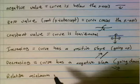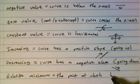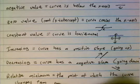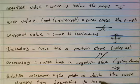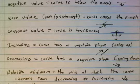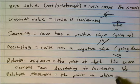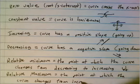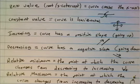A relative minimum is the point at which the curve changes from decreasing to increasing. We didn't use that definition last year but that little picture should look familiar. A relative maximum is the reverse — the point at which the curve changes from increasing to decreasing, and again that drawing should look familiar from last year.